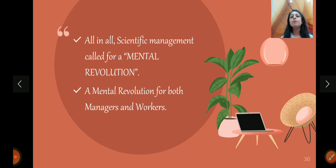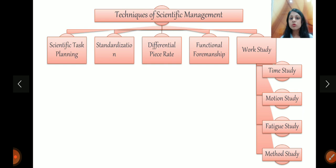Now, to follow all these principles, Taylor also came up with certain techniques. He told what the principles are, but how to achieve these principles, how to ensure there is cooperation in organization, how to ensure work is being done scientifically, how to ensure there is harmony, how to ensure each person works at their greatest efficiency, for that, Taylor gave five techniques: scientific task planning, standardization, differential piece rate, functional foremanship, and work study. Let's understand them one by one.